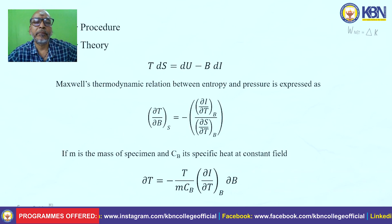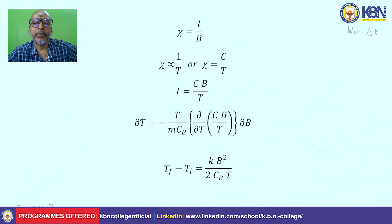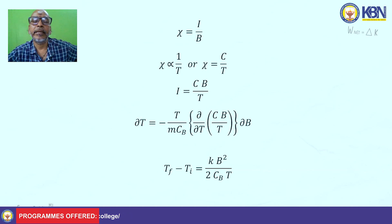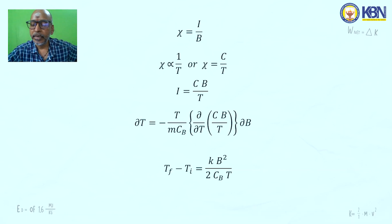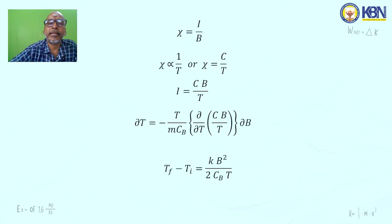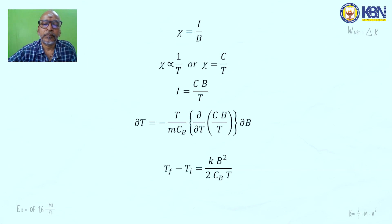This is derived using the second and first laws of thermodynamics, where dW = P dV. The magnetic susceptibility χ is the ratio of intensity of magnetization to magnetic induction, and is inversely proportional to absolute temperature: χ = C/T (Curie's law), where C is the Curie constant. From this relation, the formula obtained is: T_f − T_i = −KB²/(2CT), where T_f is the final temperature, T_i is the initial temperature, B is the magnetic induction, and T is the absolute temperature.